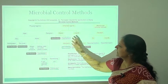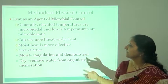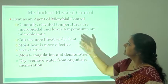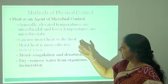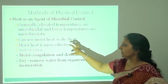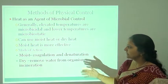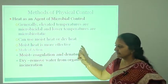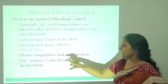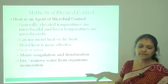Chemical methods include gas or liquid, and mechanical methods include filtration by air and filtration by liquid. Heat is an agent of microbial control: elevated temperatures are microbicidal and lower temperatures are microstatic — meaning they stop the growth of microorganisms. Moist heat is more effective than dry heat. Moist heat causes coagulation and denaturation, while dry heat removes water from organisms such as by incineration.